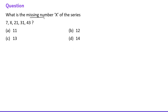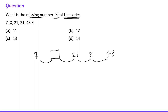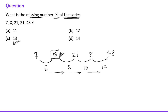Next question: What is the missing number x in the series 7, ?, 21, 31, 43? The differences between consecutive terms are: 12 (21 to 31... wait — 31-21=10, 43-31=12). The difference increases by 2 each time, so before 21 the difference should be 8, meaning the missing term is 7+6=13. Check: 13+8=21. Yes, the difference increases by 2 each step. So 13 is the missing term.